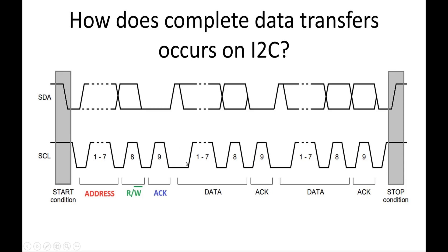In short, the data byte starts coming — this data can be either from master or slave depending upon who is the transmitter, and the transmitter is decided by the read/write bit. After each byte, the other side gives the acknowledgement bit. Similarly, n number of bytes can be sent from the transmitter to the receiver, with the other side acknowledging each. Once the transfer is over, the stop condition is generated by the master.